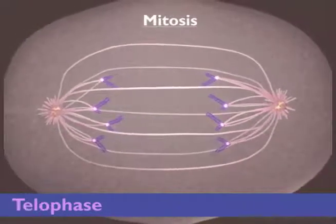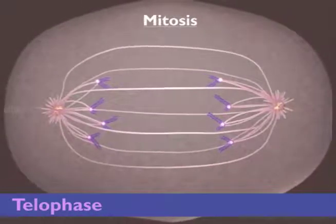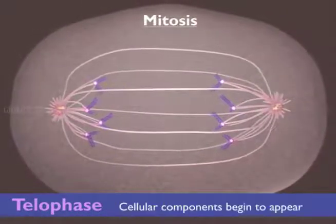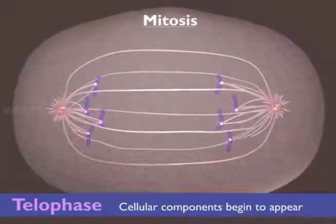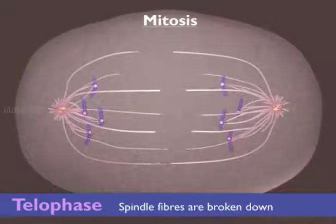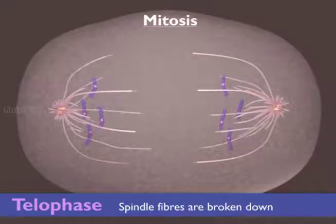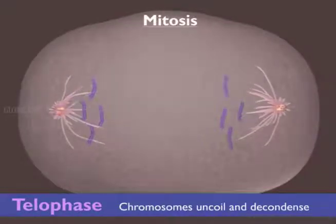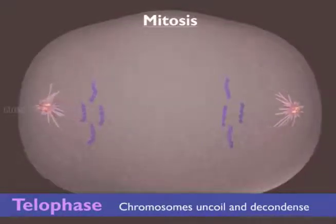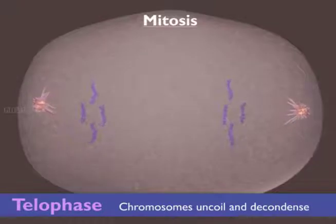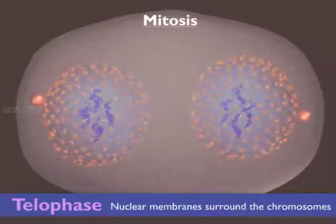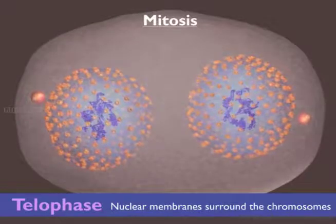Telophase is the final stage of mitosis. At this stage, the components of the new cells begin to appear. The spindle fibers are completely broken down. The chromosomes uncoil and return to an uncondensed state. A new nuclear membrane surrounds each set of chromosomes at the poles of each cell.